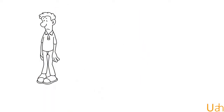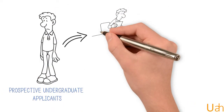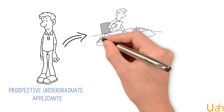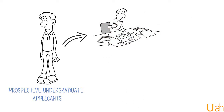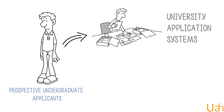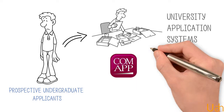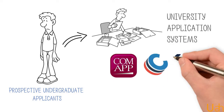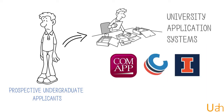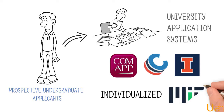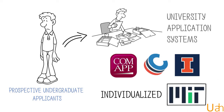Prospective undergraduate applicants in the U.S. can easily get overwhelmed while filling up several centralized university application systems, like Common App, Coalition App, Illinois App, etc., and some individualized university application systems such as MIT's.